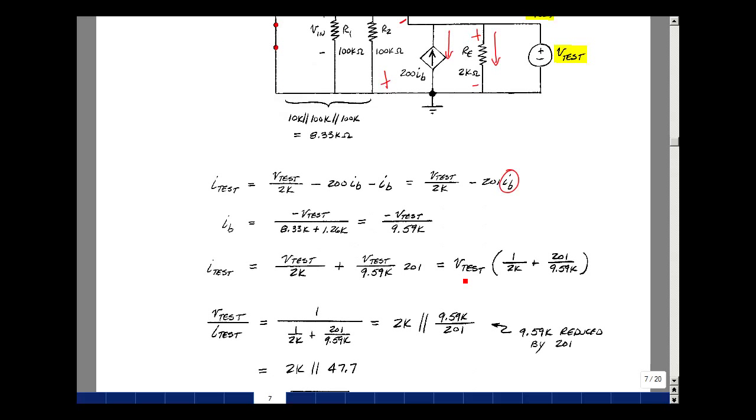So the ratio then of V_test divided by I_test would be the reciprocal of this equation. Now this looks like our formula for parallel resistances. If you think of this as a 1 over, in other words, this would be 1 over 9.59k divided by 201.